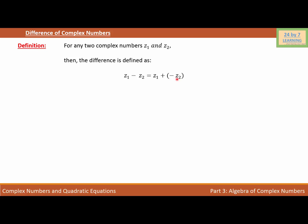...the difference between two complex numbers, we are just subtracting one complex number from the other. Or we can also add the negative of a complex number with another complex number, which is basically the same as the difference of two complex numbers.